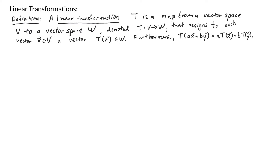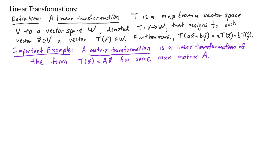An important example of a linear transformation is a matrix transformation. A matrix transformation is a linear transformation where the output is some matrix A times your input vector. Previously we learned that any linear transformation from Rn to Rm can be thought of as a matrix transformation, as long as we understand what the transformation is doing to the basis vectors in Rn.